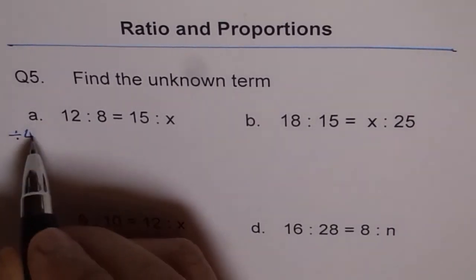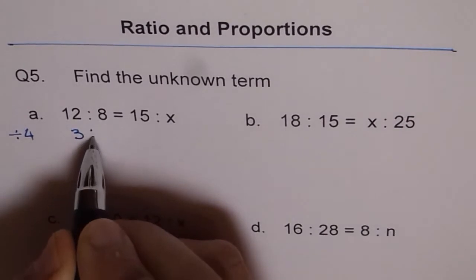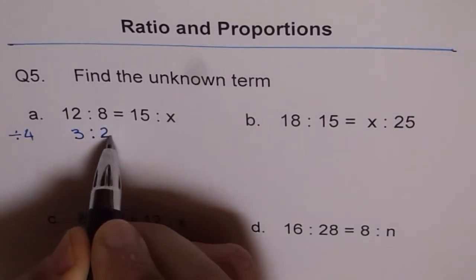If you do that, you get 4 times 3 is 12 and 4 times 2 is 8. So you get 3 is to 2.